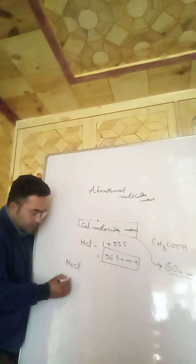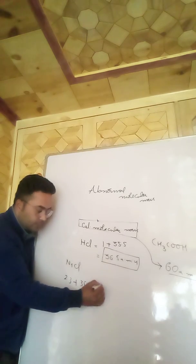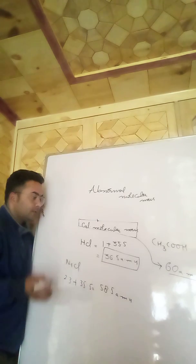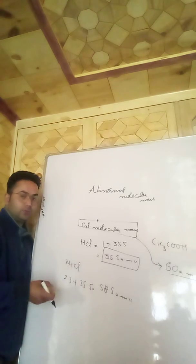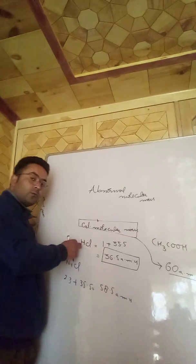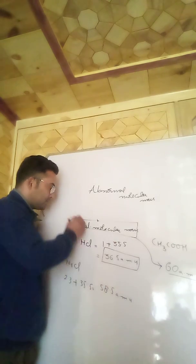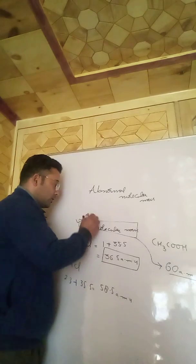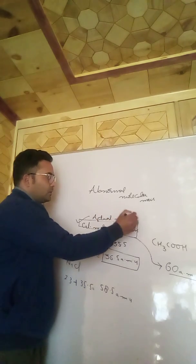Likewise, if we take NaCl — sodium is 23 and chlorine is 35.5 — the sum gives us 58.5. This means we can calculate the molecular mass of any molecule from the atomic masses of the respective elements present in it. This is called the calculated molecular mass.